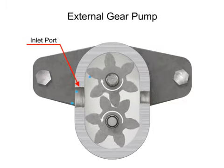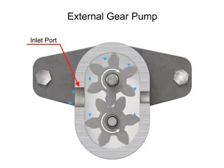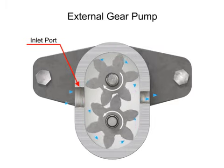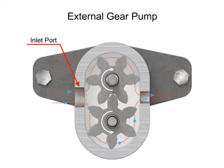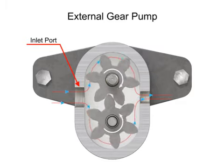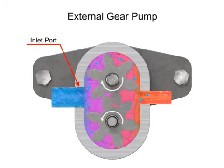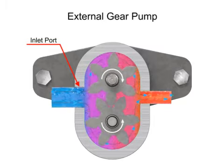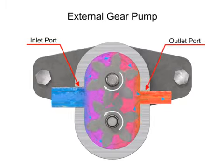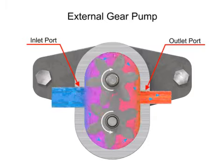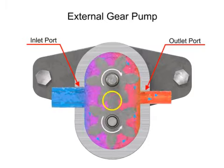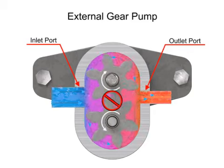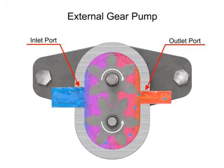Fluid flows into the cavities and is trapped by the gear teeth. As the gears rotate, a flow path is created around the outside of each one. Fluid trapped in the slots between teeth is carried around and discharged into the cavity with the outlet port. Meshing of the teeth in the center of the pump seals the outlet port from the inlet port, and no fluid passes between the gears.